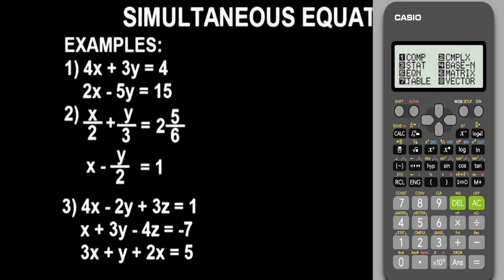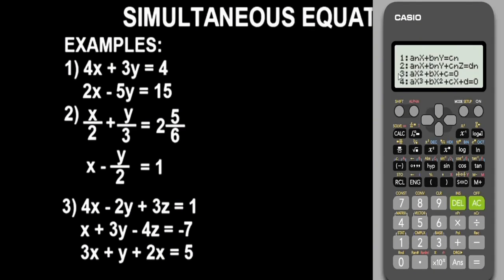To enter equation mode, press the Mode button. Equation is option 5, so press 5. Now we want to solve simultaneous equations involving two variables — that's option 1. So press 1. That covers simultaneous equations involving two variables.